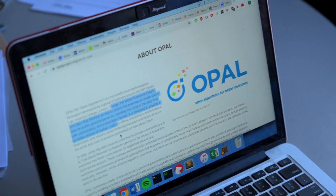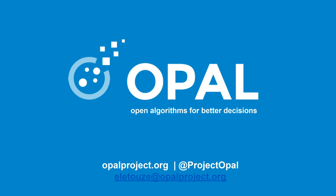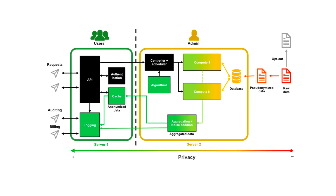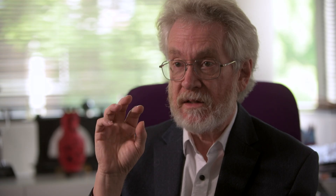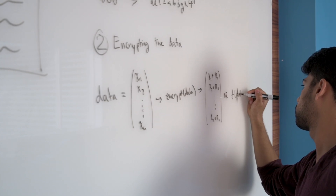A signature project of ours is called Open Algorithms. This is a way of making sure that AI is applied to data in a way that respects privacy, is interpretable, and is auditable. We build example software and develop new analytics methods that protect privacy and are far more secure than previous methods.